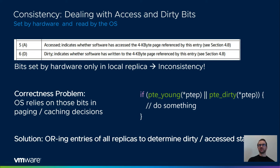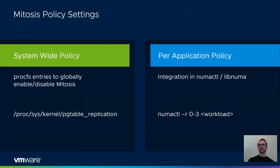The result of this read function is then used by the paging and caching algorithms to ensure their correctness. Mitosis can be controlled using a system-wide policy to enable and disable page table replication for all processes through entries in the procfs file system. Alternatively, we provide a fine-grained per-allocation policy selection mechanism through integration with libNUMA and NUMA control.